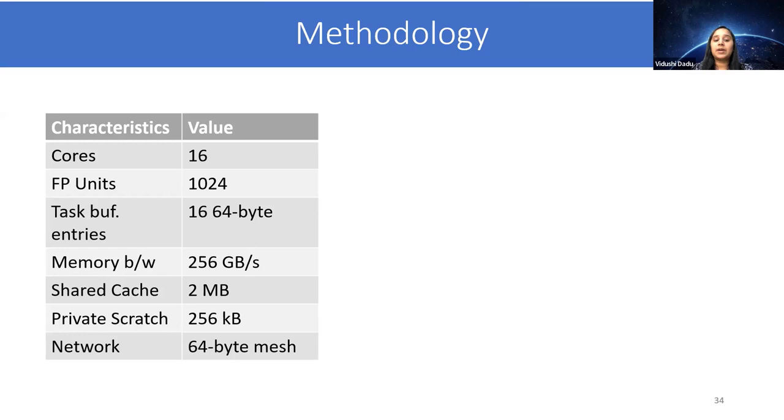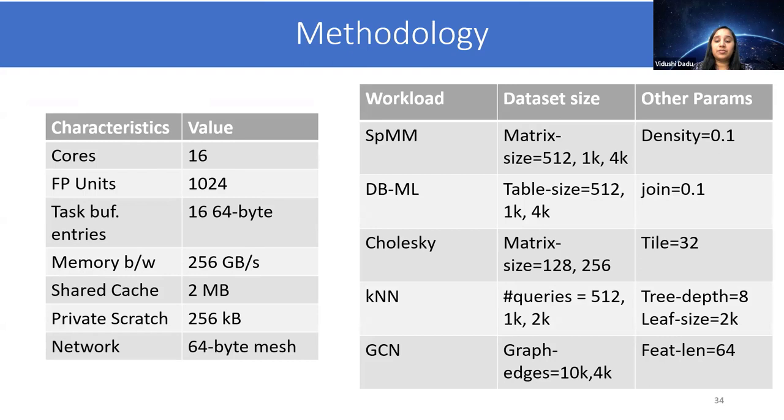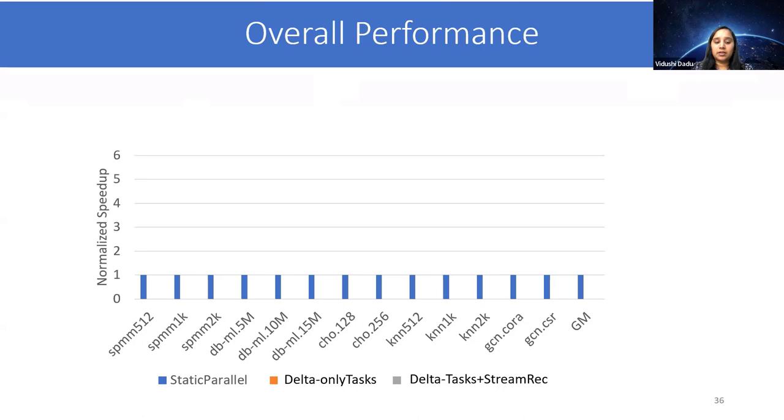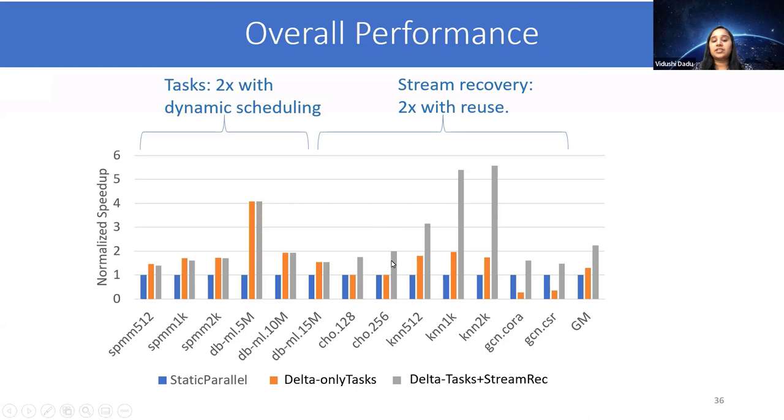In terms of overall performance, we normalize the speedup over static parallel execution. With tasks, we can get some speedup. However, the speedups are only moderate as they are still limited by inter-task dependencies. With stream recovery, the performance is boosted. For example, in Cholesky, streaming optimization resulted in improved parallelism, while in KNN, the batching optimization resulted in improved reuse.